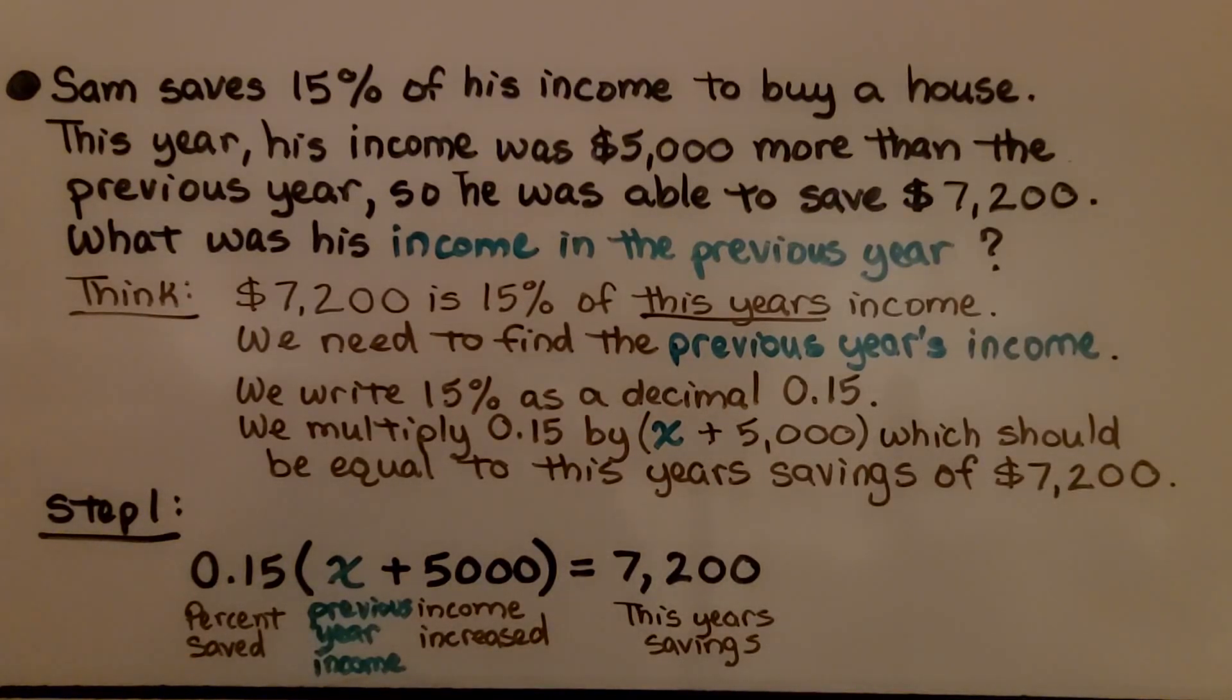So we write 15% as a decimal as 0.15 and multiply 0.15 by x for the previous year's income, which should equal this year's savings of $7,200. So for step one, our equation is 0.15 times x plus $5,000, that's how much his income increased this year, and it's equal to $7,200, that's this year's savings.